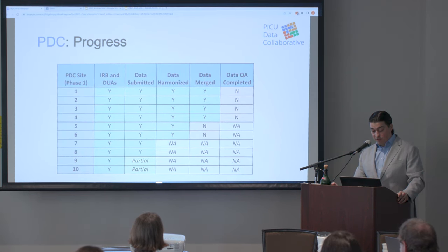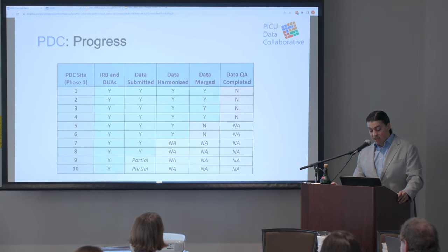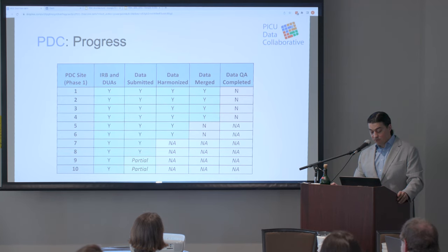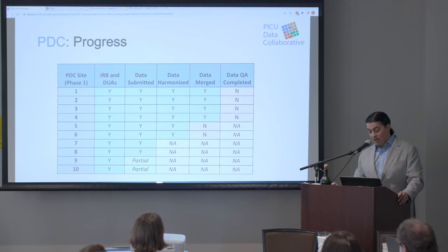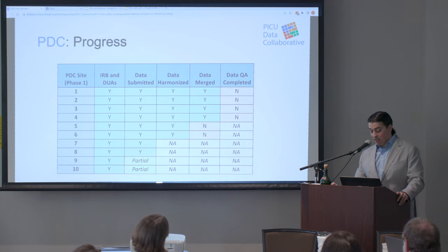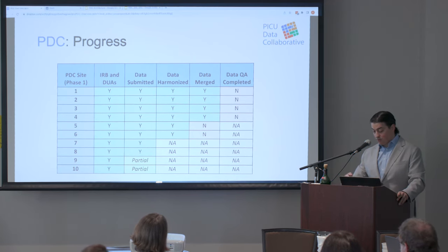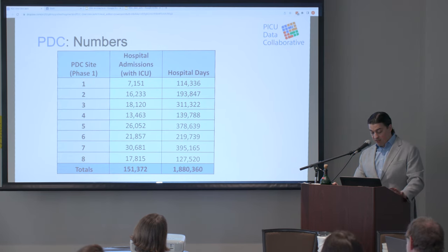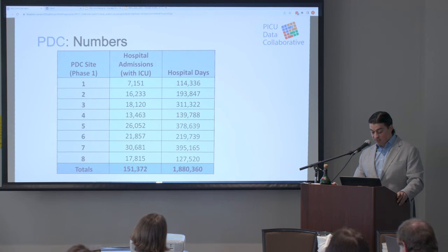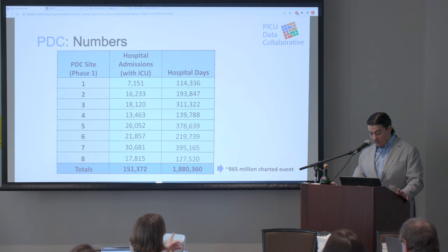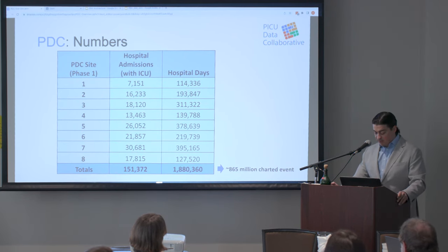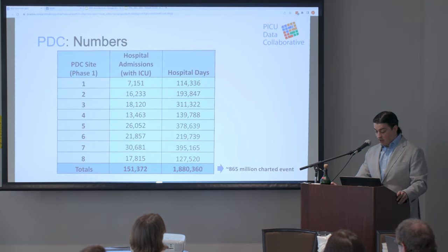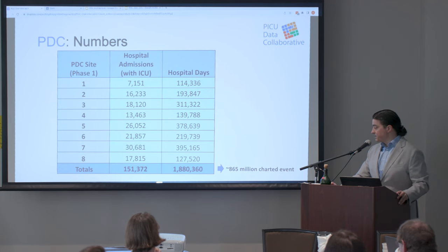Progress so far: Phase one has ten sites. All ten have approvals; eight of the ten have submitted the full dataset, two have submitted partial data. Six to eight sites have harmonized data, and four have data merged at this point. For the eight sites that have submitted full data, we have about 151,000 ICU hospital admissions with an ICU stay — equivalent to almost two million hospital days — and an estimated 865 million charted events. As Randall would say, that's a lot of natural experiments happening in that dataset.